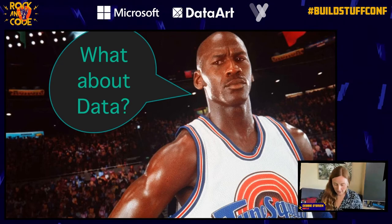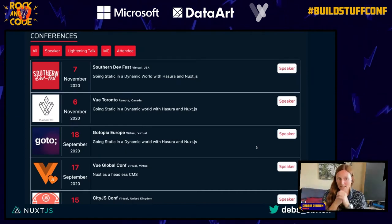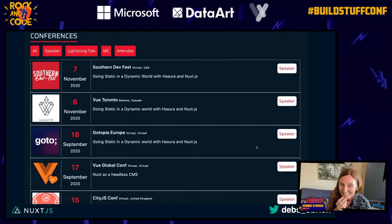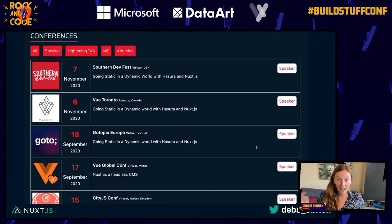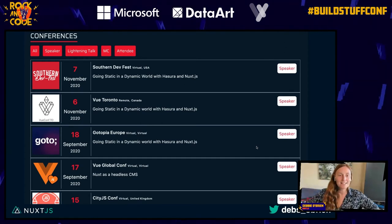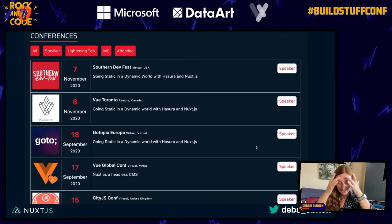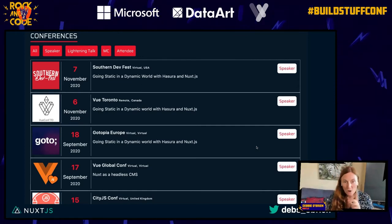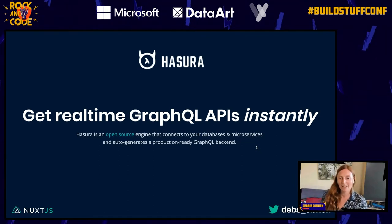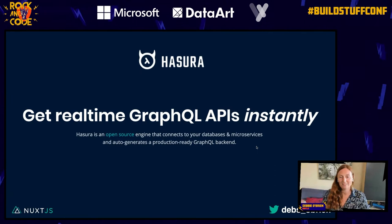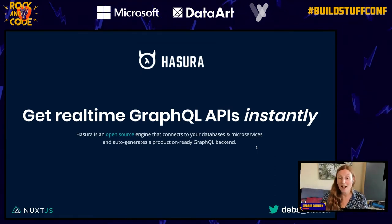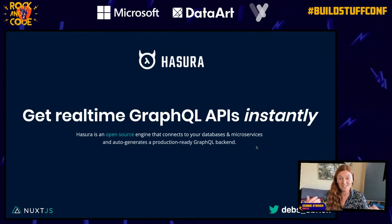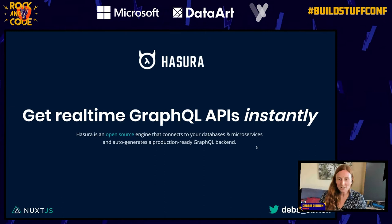What about data? I have a website where I put all my conferences. My data is in Hasura. As a front-end developer, I don't know anything about back-end. Hasura is where you can get real-time GraphQL APIs instantly. It's an open source engine that connects your databases and microservices and auto-generates a production-ready GraphQL backend. I'm going to show you in the actual Hasura. I've already logged in and got my table set up. If I wanted to create a table, I just press create, call it Meetups, add a column name, column type — text — and add the table. Simple.